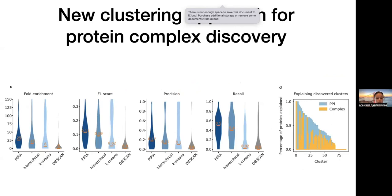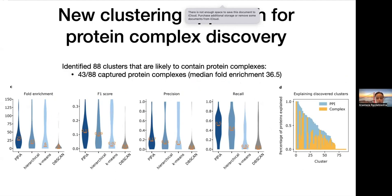Our morphologically-driven clustering approach was compared to common clustering methods including hierarchical clustering, k-means, and DBSCAN across a range of parameters. Our approach outperforms the others in many ways. We identified 88 clusters likely to contain protein complexes, and 43 of them were indeed enriched for protein complexes.